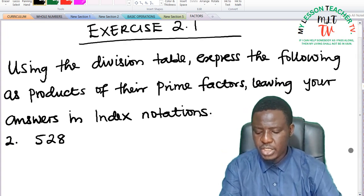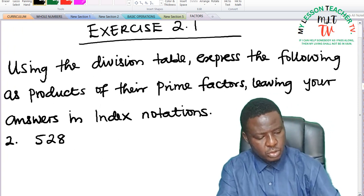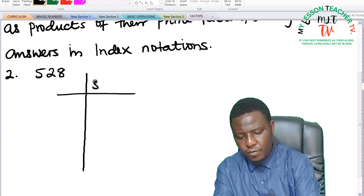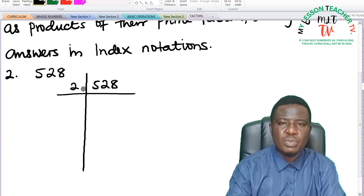Question 2 says we should express 528 as a product of its prime factors. You also use the division table. 528 divided by 2. We are starting by 2 because 2 happens to be the least prime number.